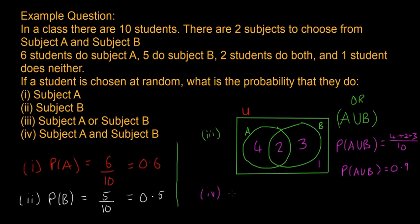Subject A and subject B. So in this case, subject A and subject B is the same thing as intersect. So bear in mind that and can be the same as intersect sometimes. And then in this case, P of A and B is equal to 2 over 10, because it's 2 in the gap and 10 altogether, which equals 0.2.